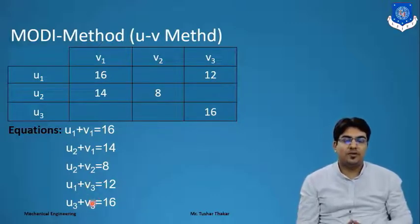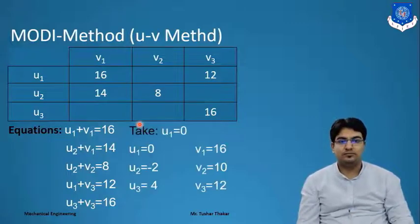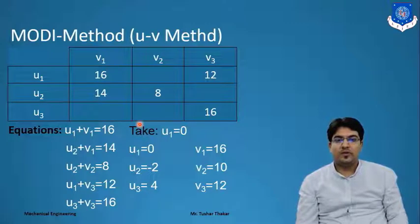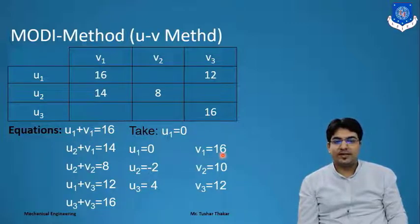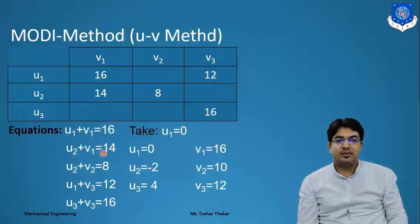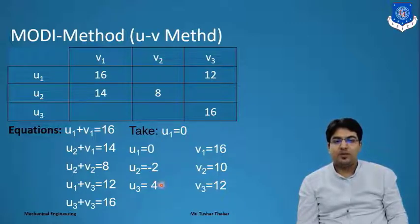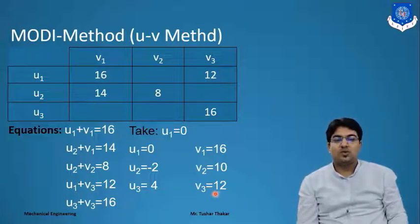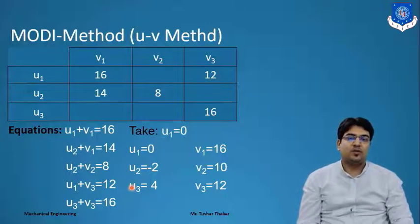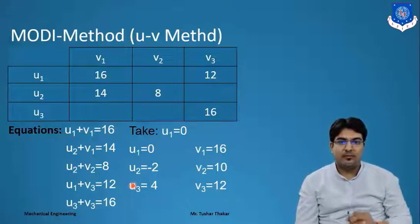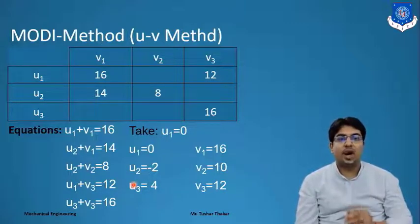To solve these equations we assume some value as 0 — take U1 equals 0. Putting U1 into the first equation, U1 plus V1 equals 60, we get V1 equals 60. Putting V1 into the second equation, U2 plus V1 equals 40, we get U2 equals minus 2. Putting U2 into the third equation gives V2 equals 10. From U1 plus V3 equals 0.12, with U1 equal to 0, we get V3 equals 0.12, and from V3 we get U3 equals 4. In the next iteration we take non-allocating cell values.